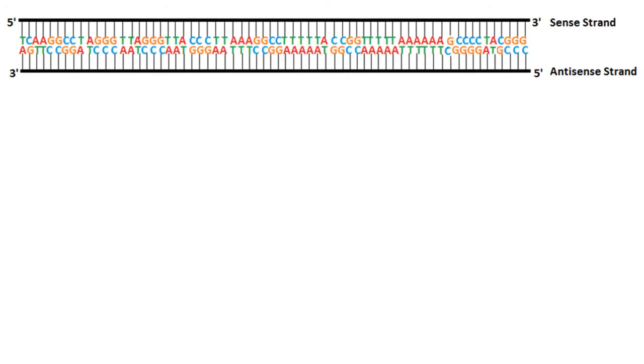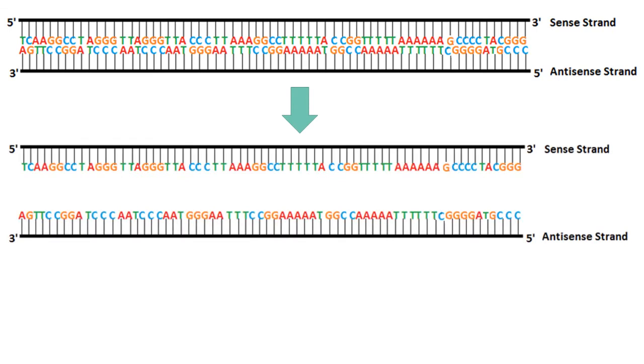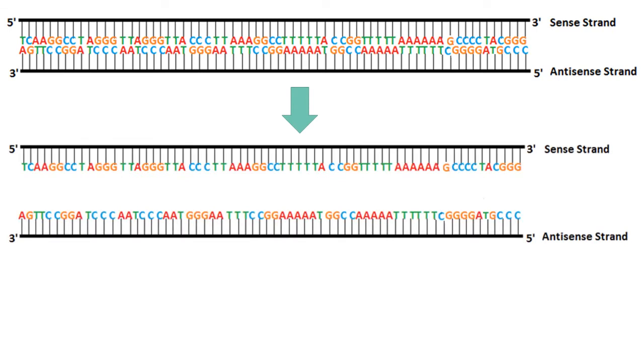During the denaturing process, the potassium ions help stabilize the negatively charged phosphate groups on the separate DNA strands.